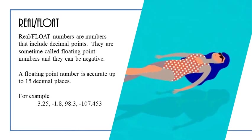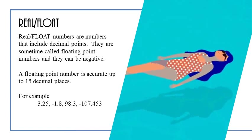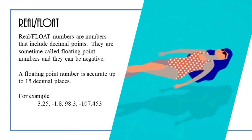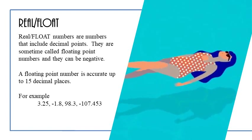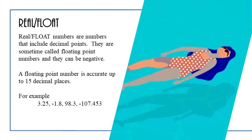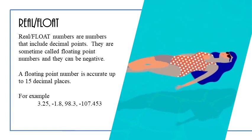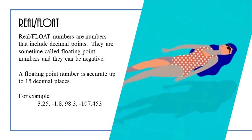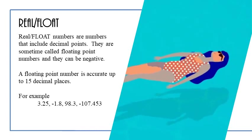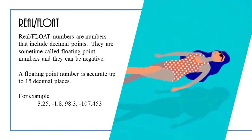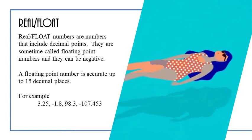Another data type is called a real, and a real sometimes is referred to as being a float number. These are numbers that include decimal points. They are sometimes called floating point numbers and can also be negative. A floating point number is accurate up to 15 decimal places. Again, you can have numbers like 3.25, negative 1.8, 98.3, or negative 107.453. In addition to all of these numbers, they carry decimal places and they can also be negative.